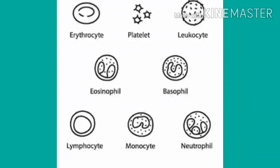Monocytes are the largest leukocytes and are somewhat amoeboid in shape. They have kidney- or horseshoe-shaped nuclei. They spend about 30 to 40 hours in the blood and then enter the tissue where they become macrophages. Macrophages are phagocytic in nature and engulf bacteria and other cellular debris.